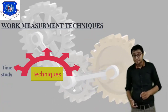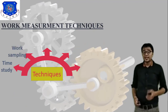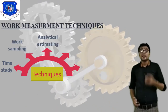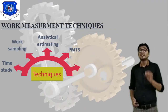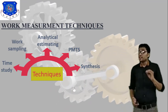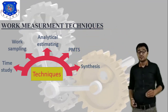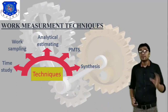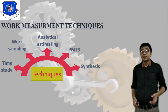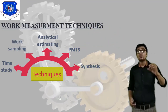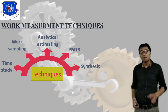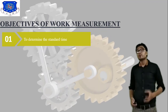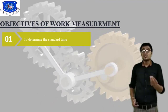The work measurement techniques are: first, time study; second, work sampling; third, analytical estimating; and fourth, PMTS (Predetermined Motion Time System). PMTS is also a very important technique, along with synthesis.